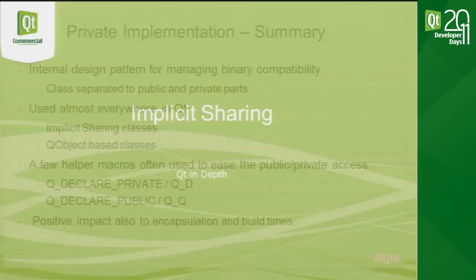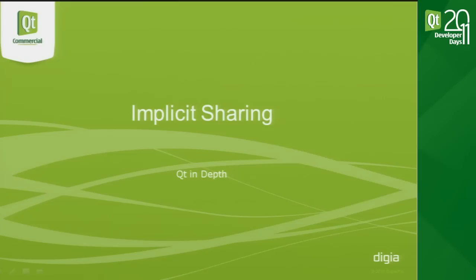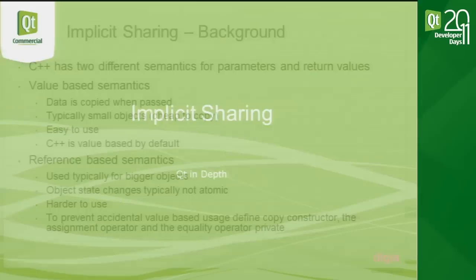Summary of private implementation: it is an internal design pattern for managing binary compatibility, where a class is separated into public and private parts. It is used almost everywhere in Qt — in QObject-based classes and in implicit shared classes — with helper macros to ease access. It also has a positive impact on encapsulation and build times.